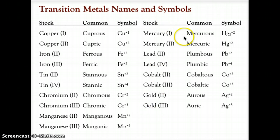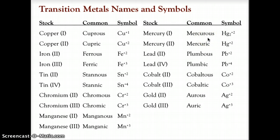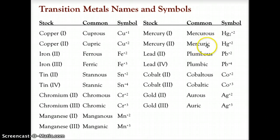Mercury is a special case in that both of its ions have a plus-two charge, but one comes as a diatomic, Hg₂. Mercury(I) is mercurous, and that is Hg₂²⁺. Mercury(II) is mercuric, and that is Hg²⁺.